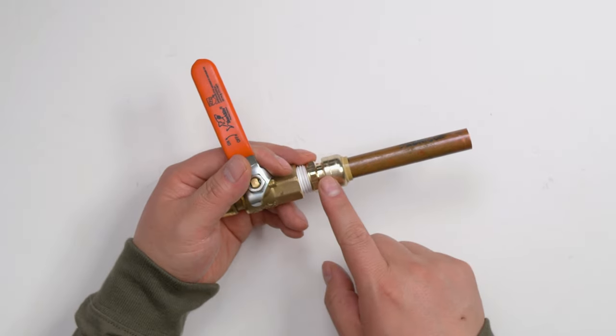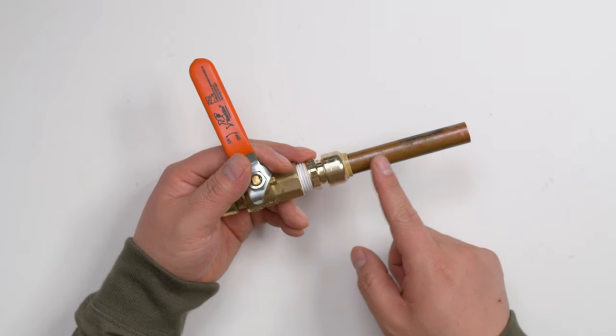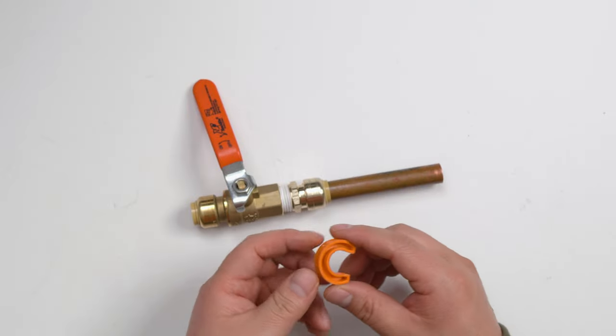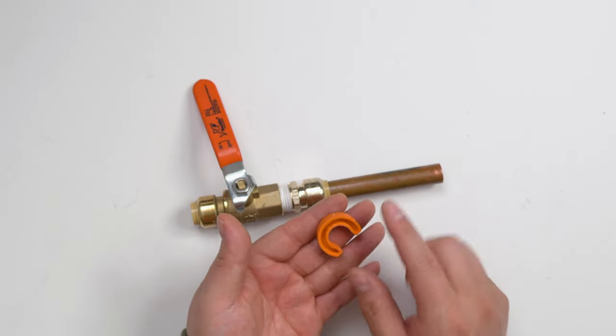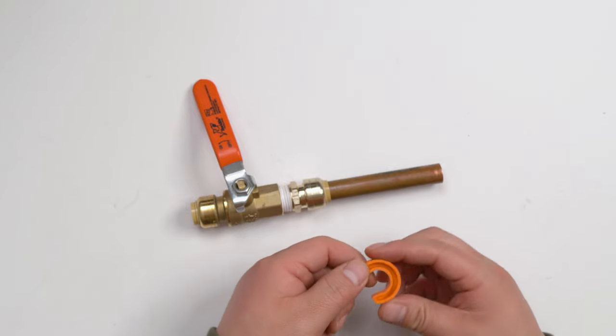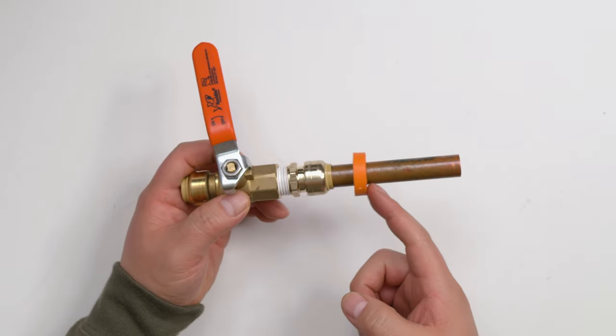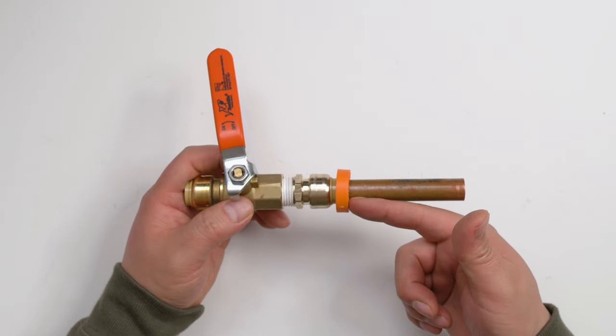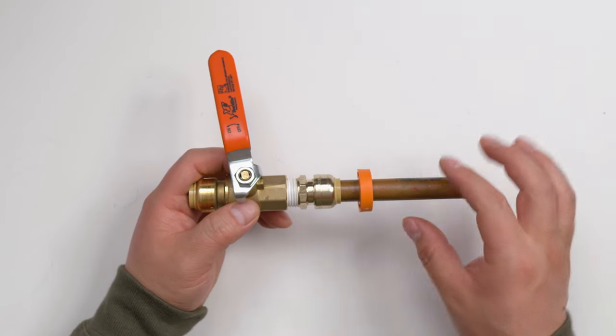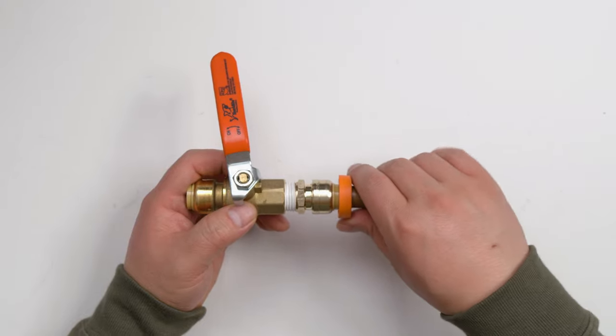But sometimes you maybe change your idea or simply just made a mistake, so you want to remove this. For SharkBite, it's very easy. We have a disconnect tool. We are using this part facing the SharkBite fitting's collar like this. Push that in. All we need to do is push this one into the fitting, squeeze the collar, and then at the same time, grab the pipe to take it out like this.